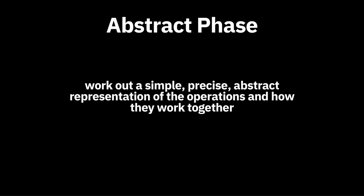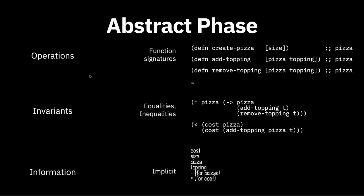In the first phase — abstract — you work out what your operations will be in an abstract way. You don't implement them; you work from the signatures. We're going to use an example domain of a pizza shop. Your operations are just going to be function signatures: the name, the arguments and their types, and the return type. Here I'm using Clojure. Notice I don't have any implementations — it's just the first line of the function. There's no way to notate the return type, so I'm just going to put it as a comment. The names of the arguments are implying their types.